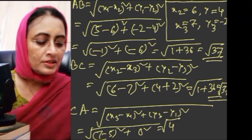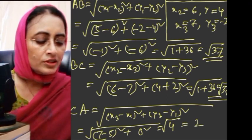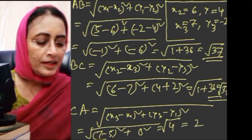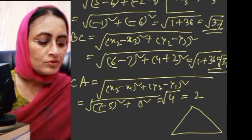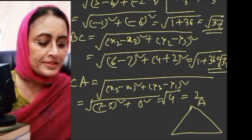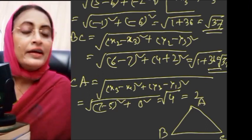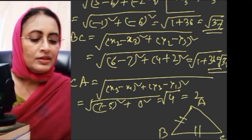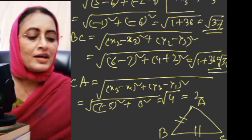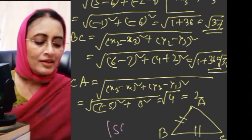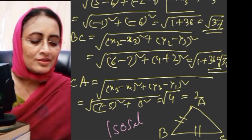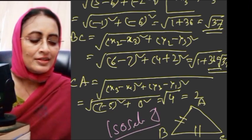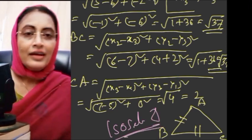So if we draw the triangle with these three points, AB = BC = √37, and those two sides are equal. Therefore, this must be an isosceles triangle.